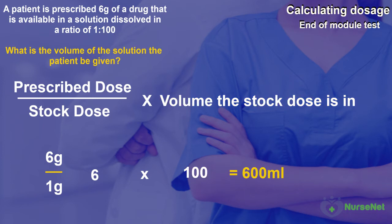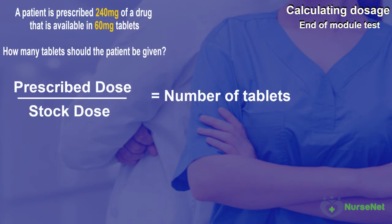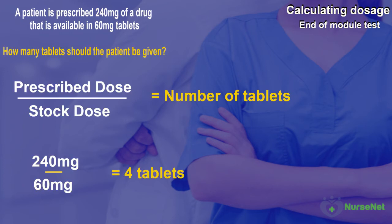Question 5. A patient is prescribed 240mg of a drug that is available in 60mg tablets. How many tablets should the patient be given? In this calculation we need to divide the prescribed dose by the stock dose: 240mg divided by 60mg gives us our answer of 4 tablets.